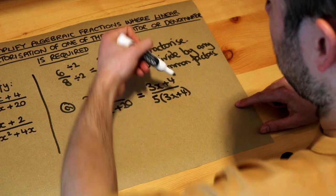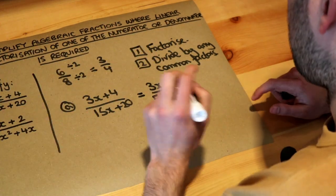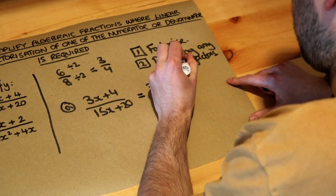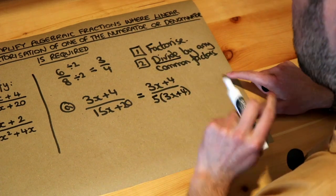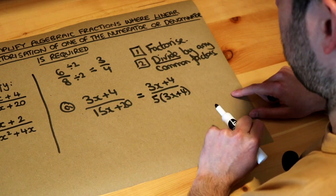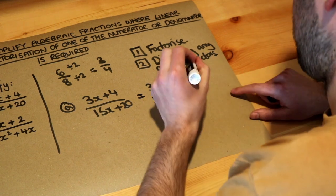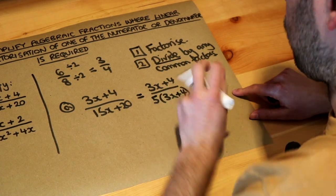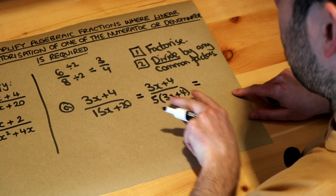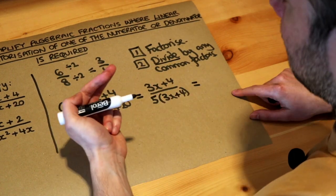Now, some people just kind of like cross these out and they get a bit confused because if you cross that out, what's left at the top? Is it 0? And that's why I think it's really important to think about simplifying fractions by dividing. So we're going to divide the top and bottom of this fraction by 3x plus 4 because that's what's common to the top and the bottom.